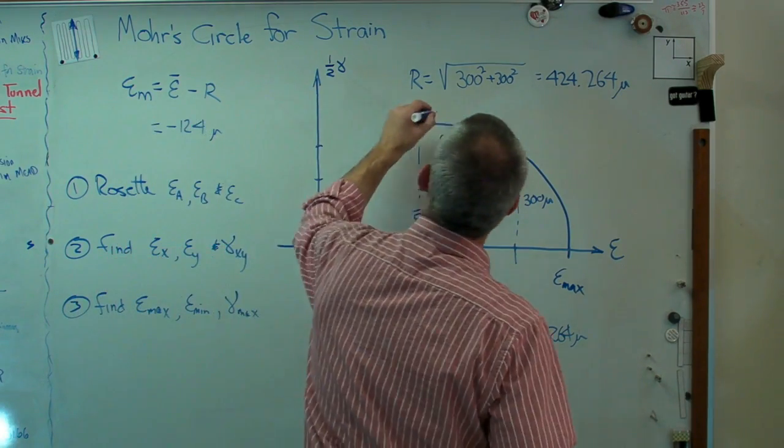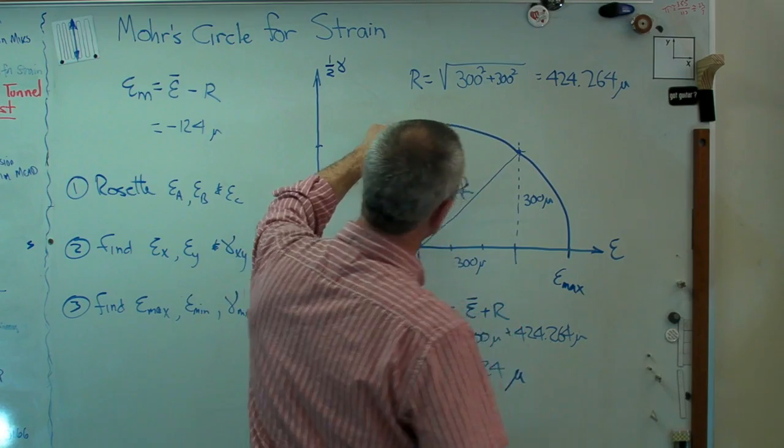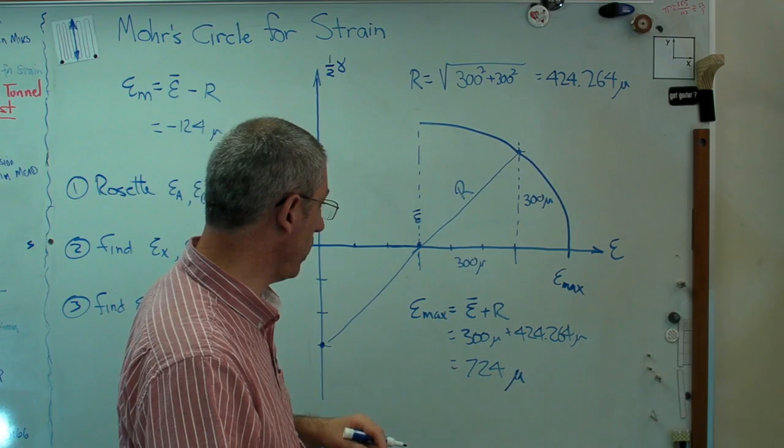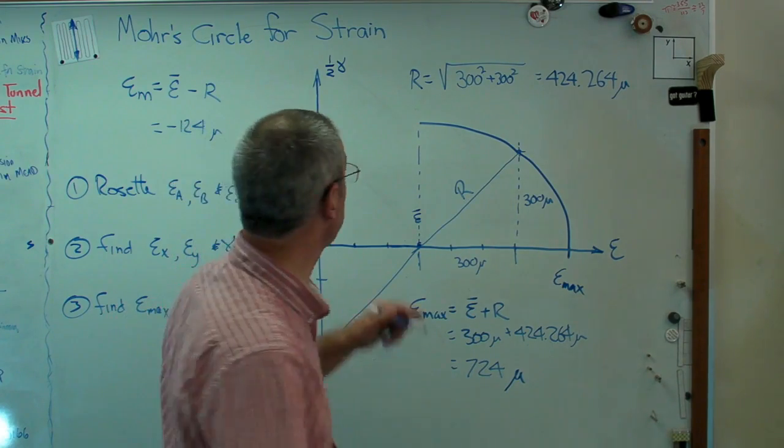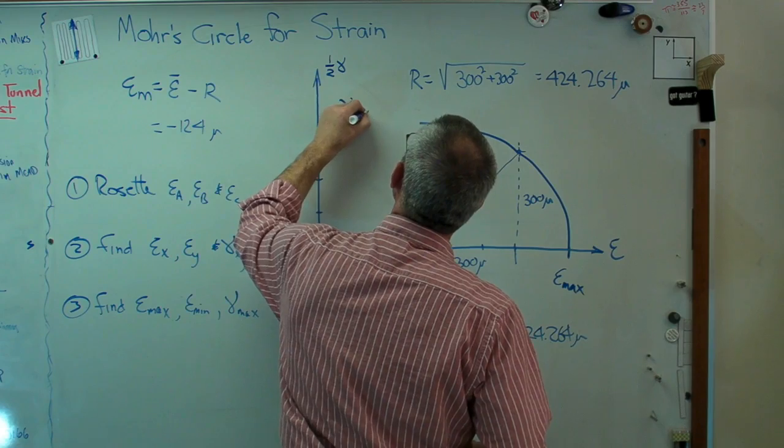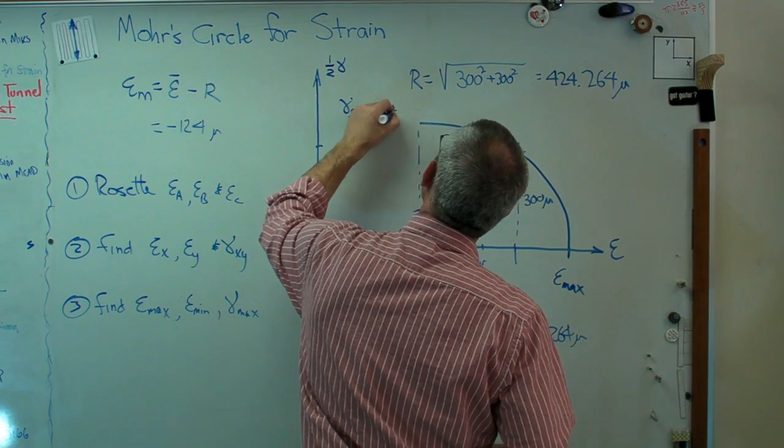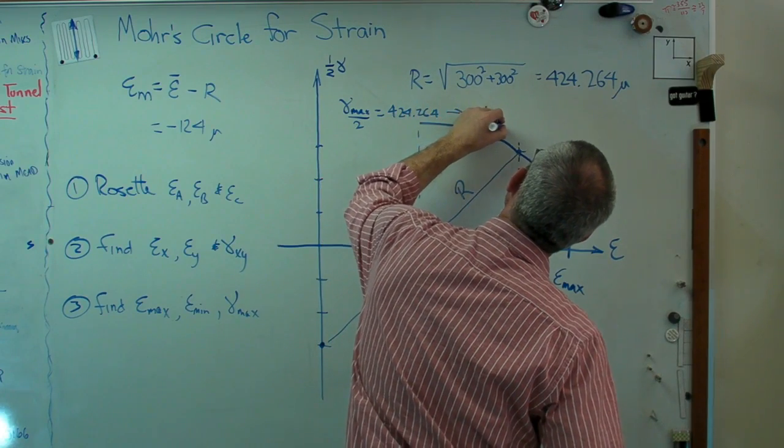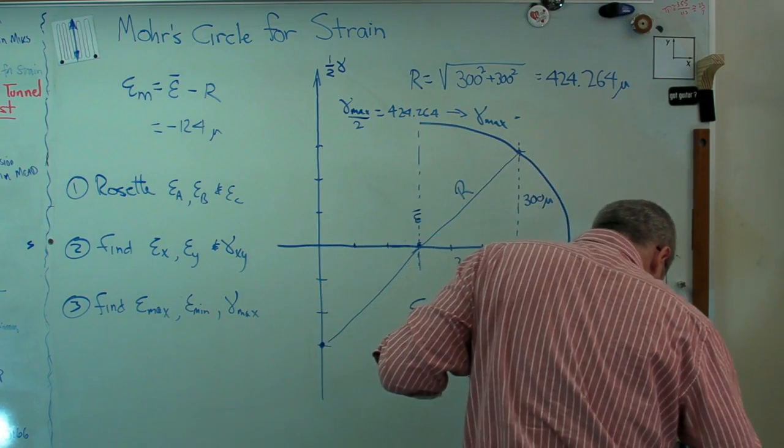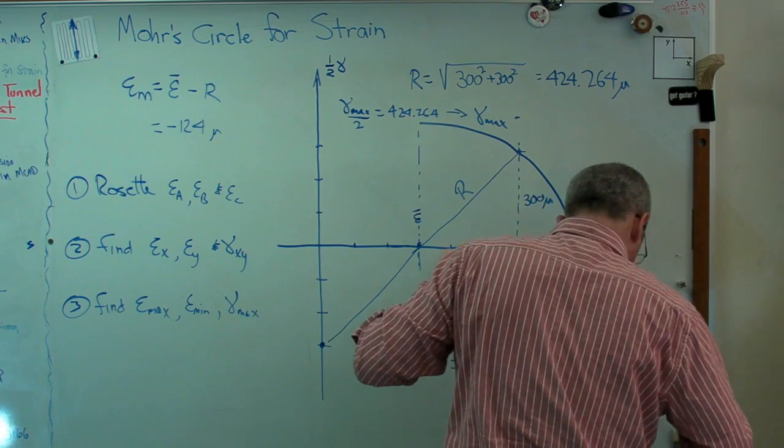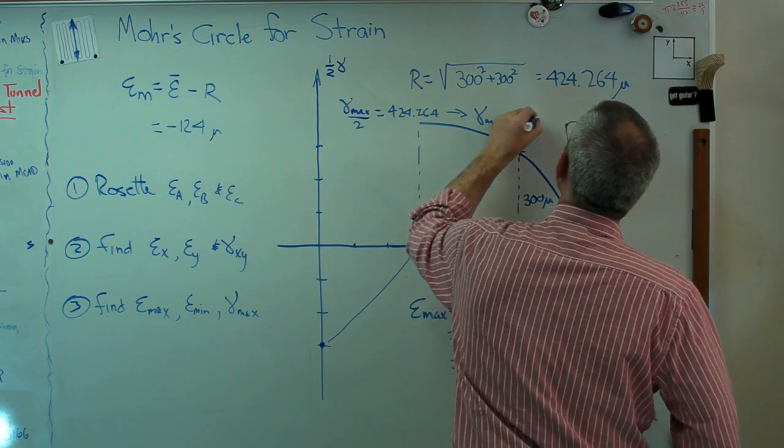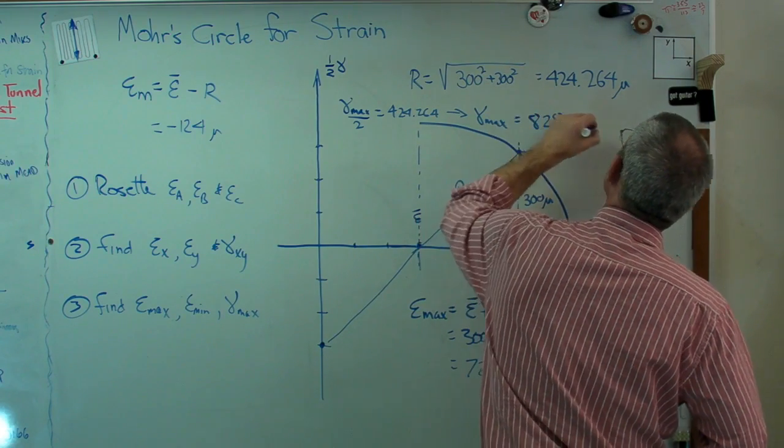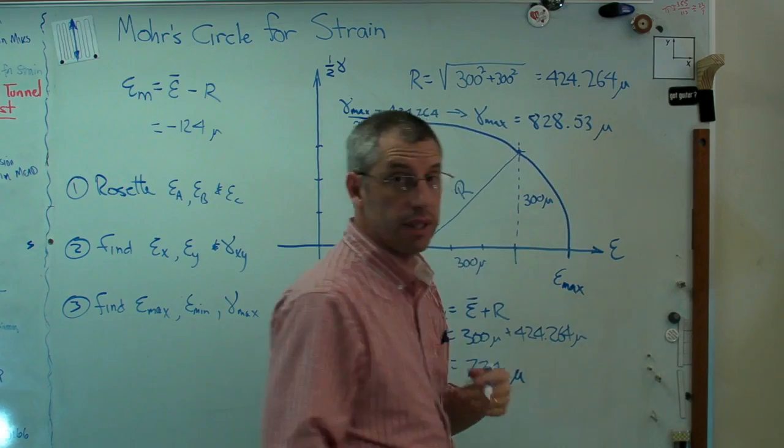And the last thing I need to know is what is gamma max. Gamma max over 2 is going to be R. Gamma max over 2 is 424.264. So gamma max equals, make sure I get this right, 828.53 pretty much. So there's gamma max.